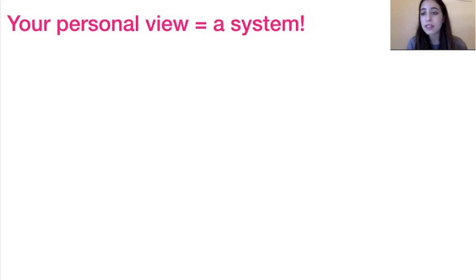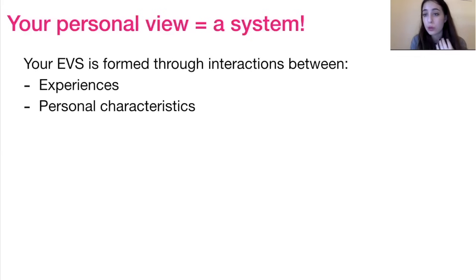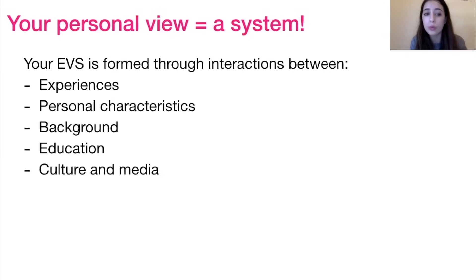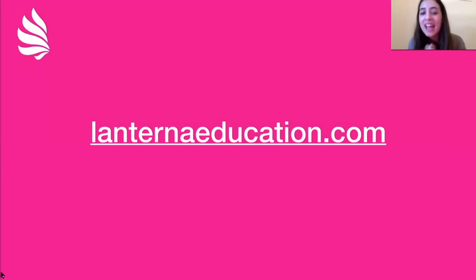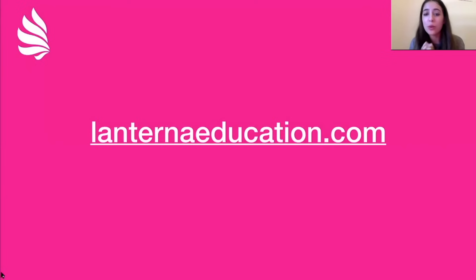The idea I want to close with is that the IB really wants you to think of the systems outlook on a range of scales. The most interesting is that your own personal view on the environment is itself a system — it's the output of your experiences, your personal characteristics, your background, what the people around you think, what you were brought up with and taught in school, and what you read in the news. That's all for the first episode. Do have a look at parts two through eight, and check out our website — I'm a tutor for Lanterna, along with many other talented individuals. If you want online private tuition, we'd be happy to help. I'll see you in part two.